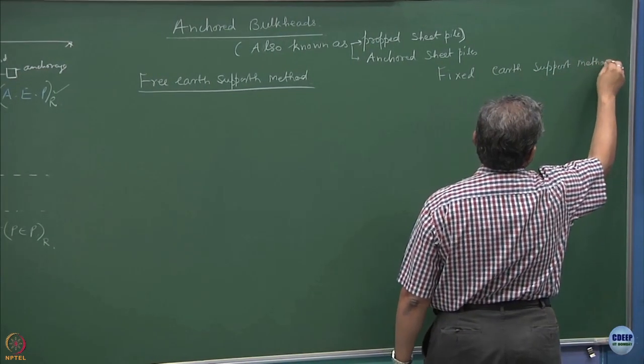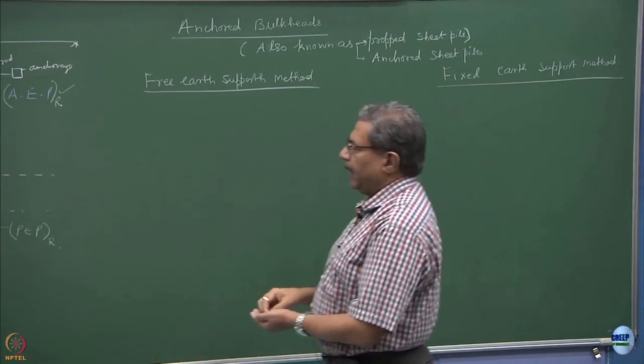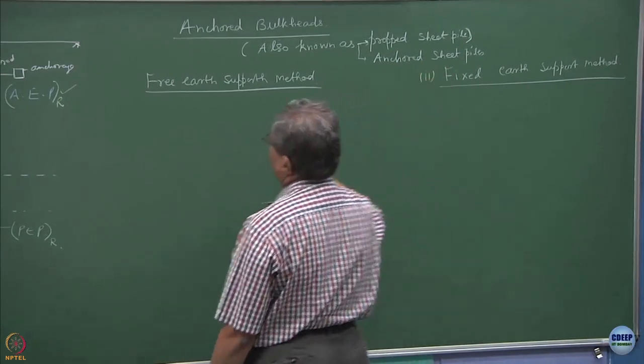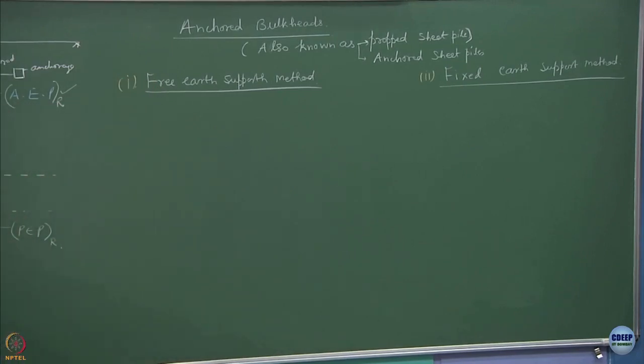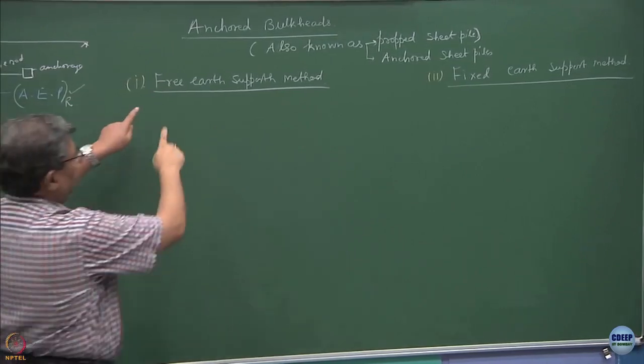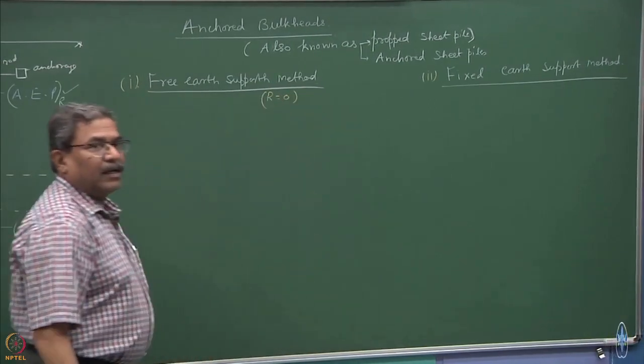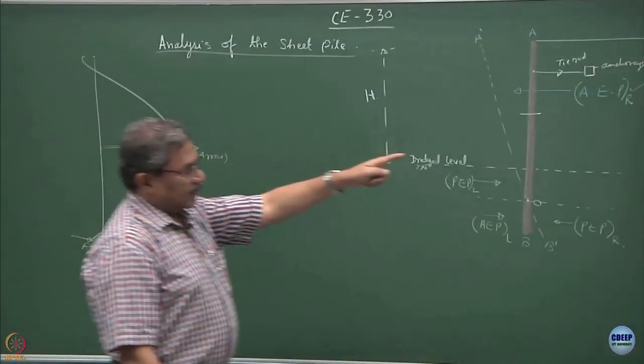These are the two methods which are normally applied to obtain or to analyze the anchored bulkheads. In this case, which is free earth support method, the value of r is going to be 0. In this case, the sheet pile is free to rotate at the bottom point, at this point.